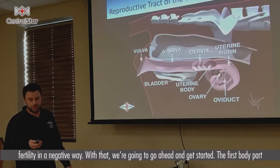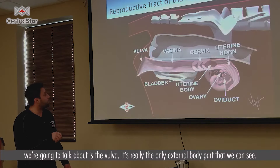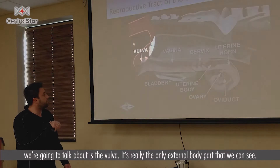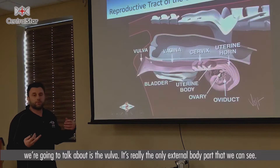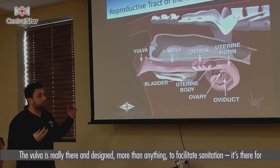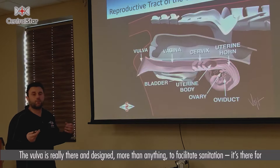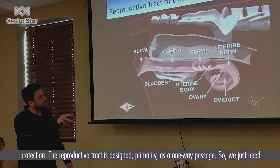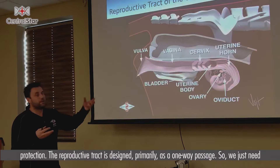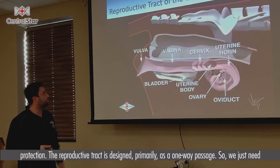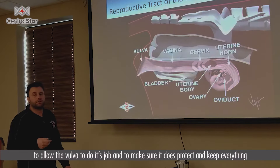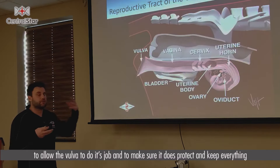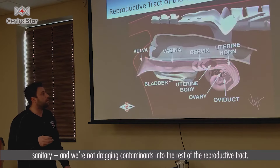So with that we're going to go ahead and get started. The first body part we're going to talk about is the vulva. It's really the only external body part that we can see. The vulva is really there and designed more than anything to facilitate sanitation — it's there for protection. The reproductive tract is really designed primarily as a one-way passage, so we just need to allow the vulva to do its job and make sure it does protect and keep everything sanitary, and we're not dragging contaminants into the rest of the reproductive tract.